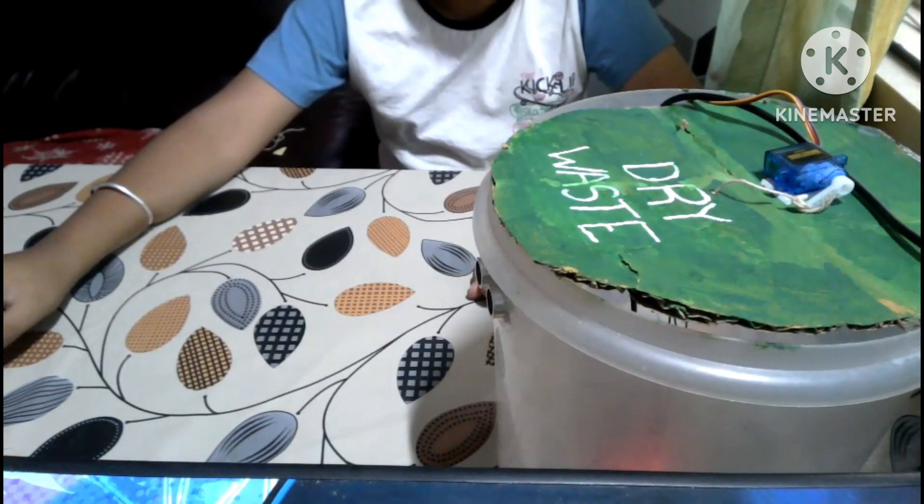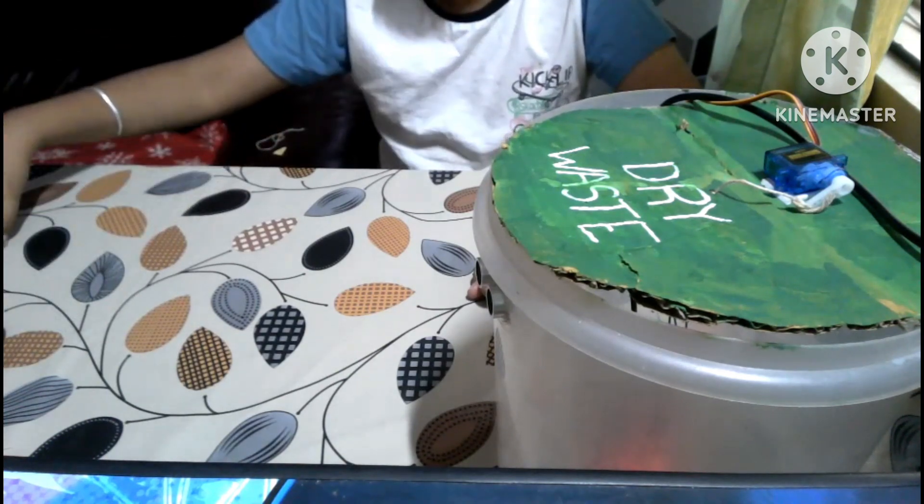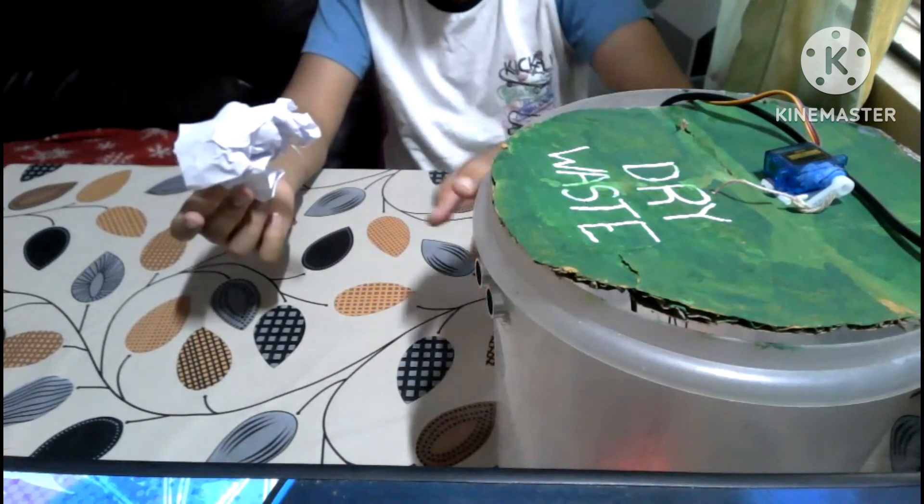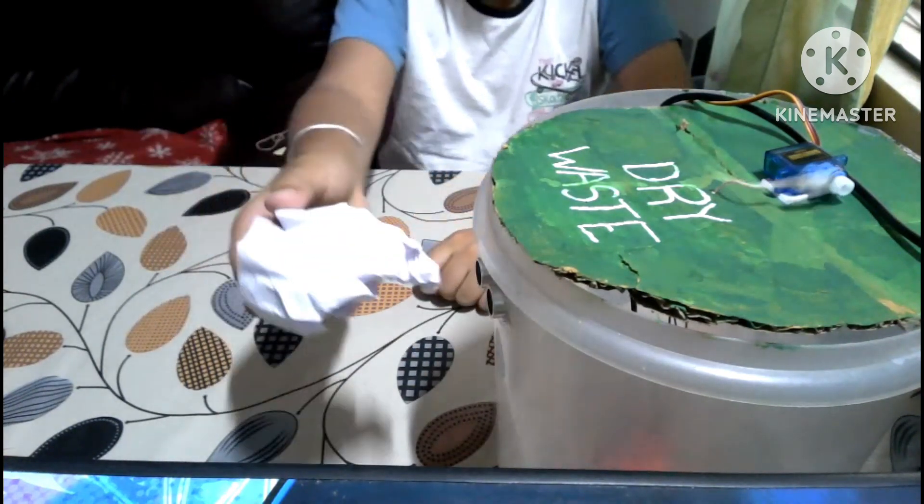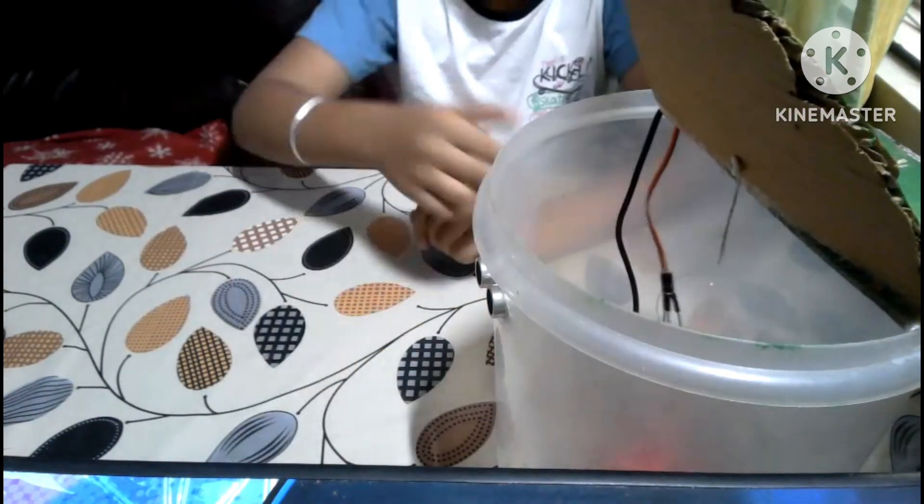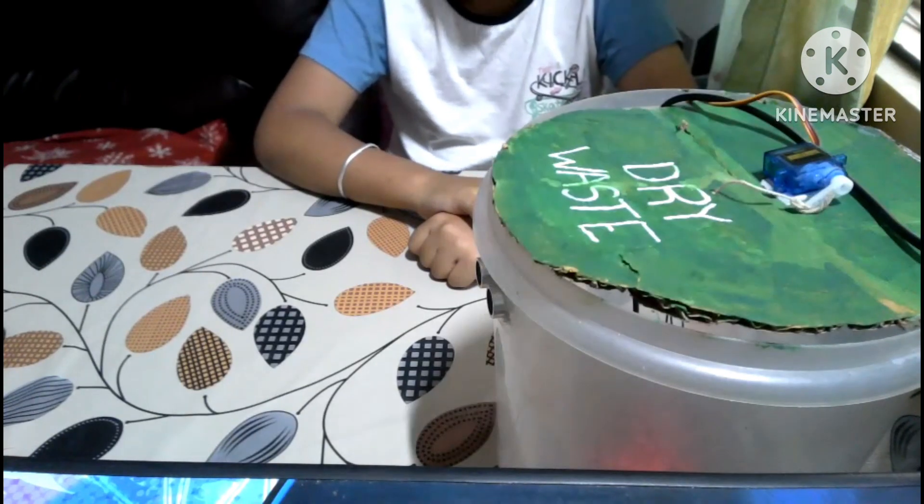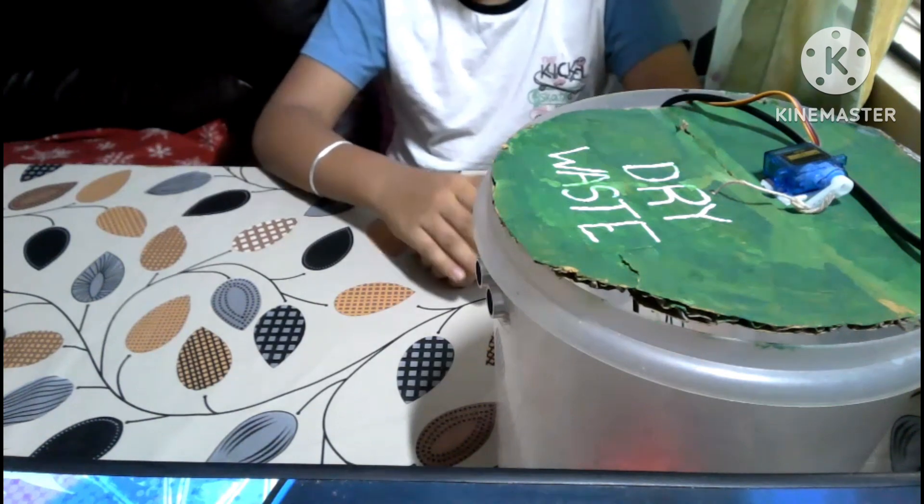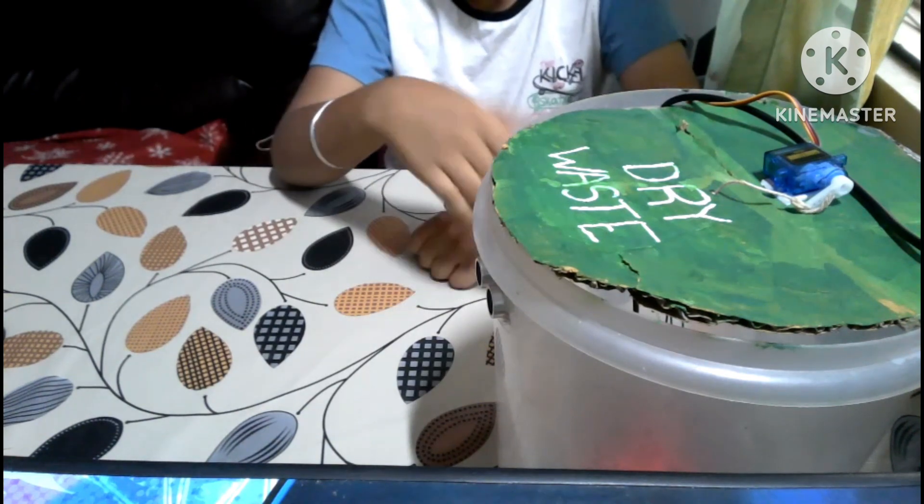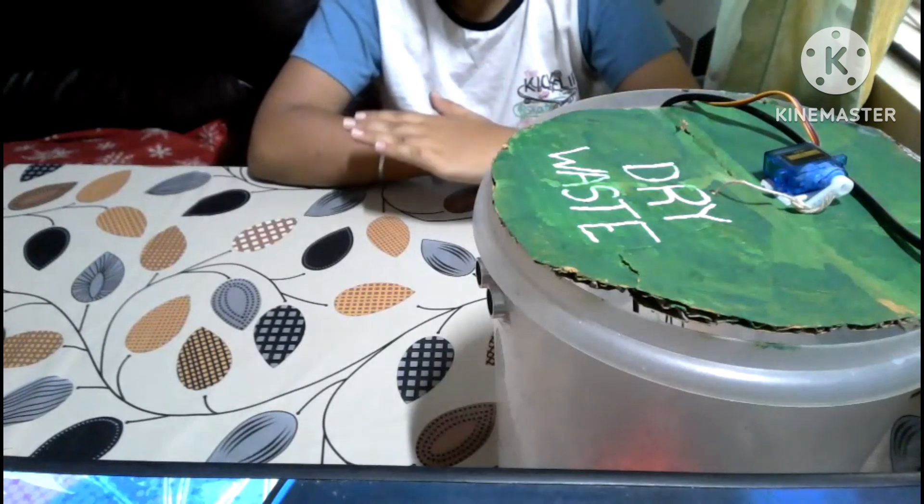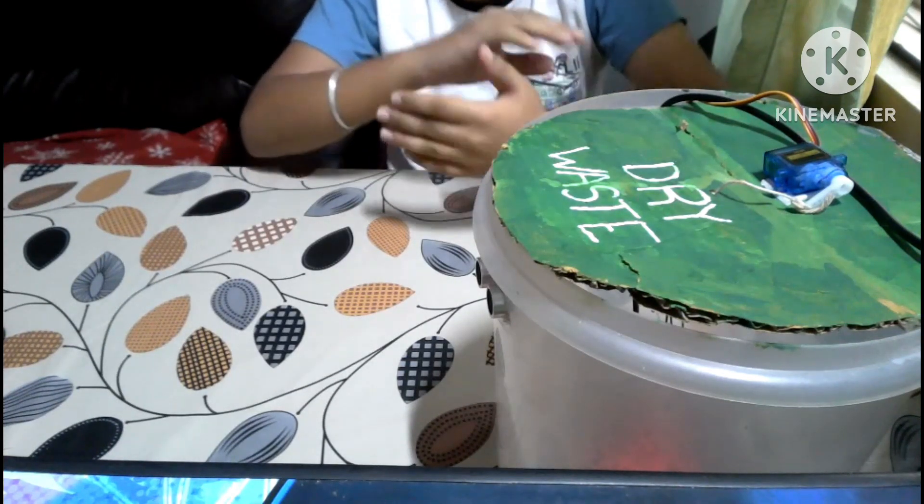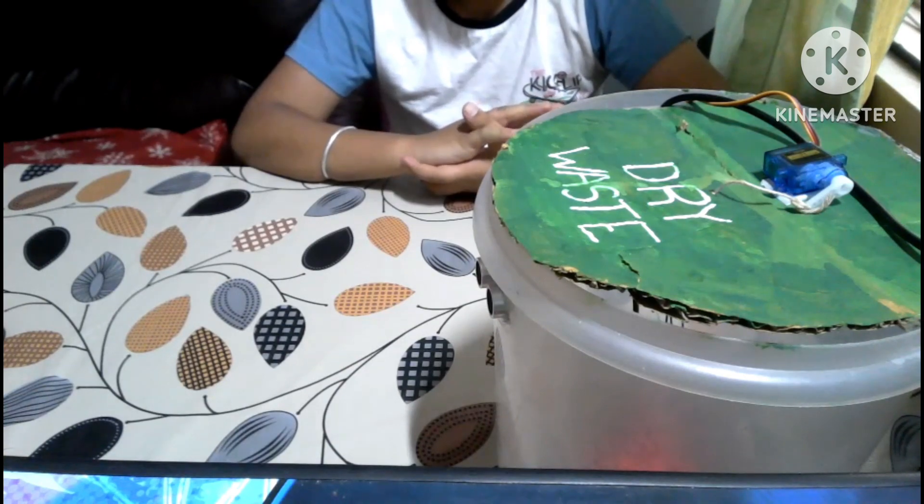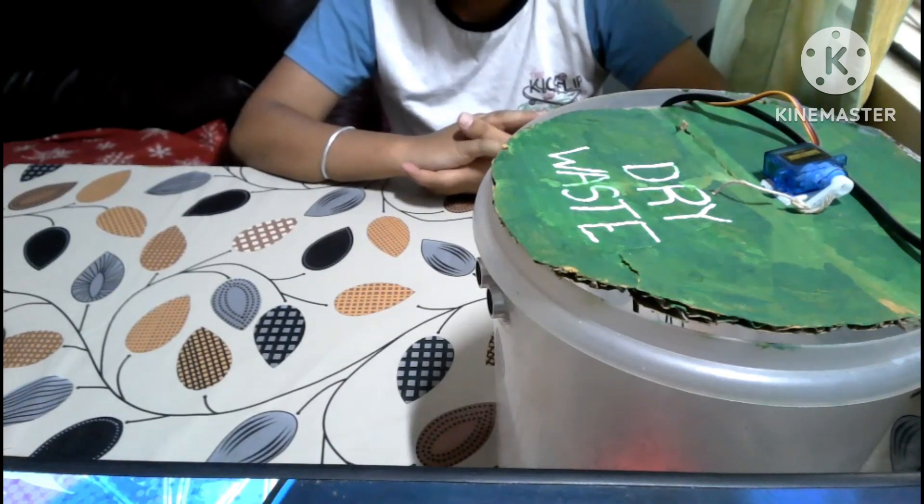After the setup and uploading the code, here is the result. As I bring trash like this paper ball in front of the sensor, it opens, and then it closes. When an object is in front of the ultrasonic sensor, the rotating arm moves back. This was my electric dustbin. Go ahead and make your own. Thank you.